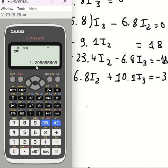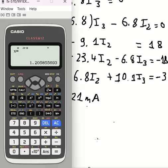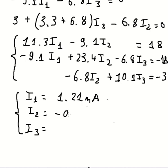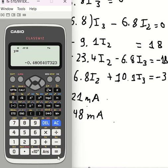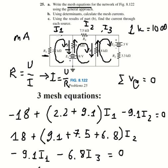The results are: I1 equals 1.21 milli-amperes, I2 equals negative 0.48 milli-amperes, and I3 equals negative 0.52 milli-amperes. Now we answer question C — they want to find the current through the source, which is the current at this location.